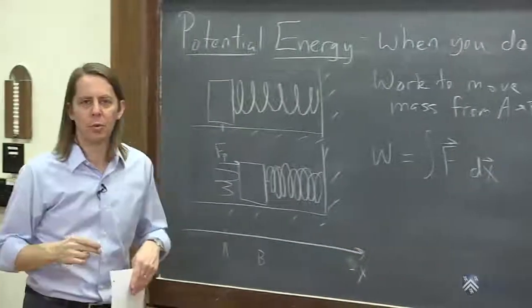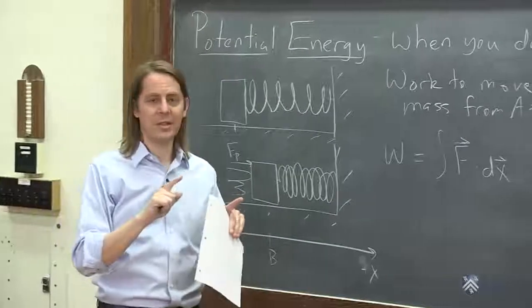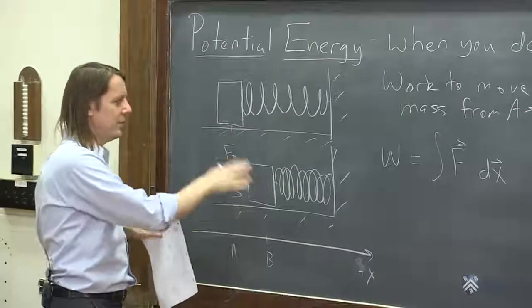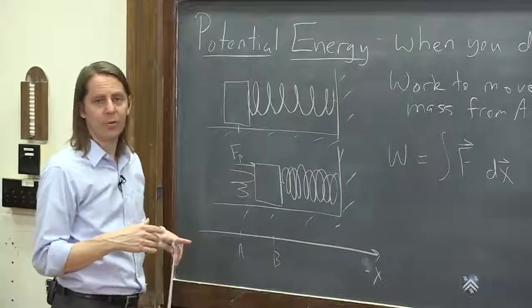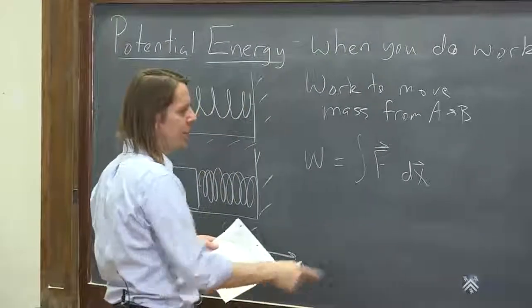So there are simple versions of work. Work is F times D. And if you want to really do vectors, it's F dot displacement. But if the force varies with position, as it does with Hooke's law for a spring, you have to do an integral. So this is a case where the force varies.